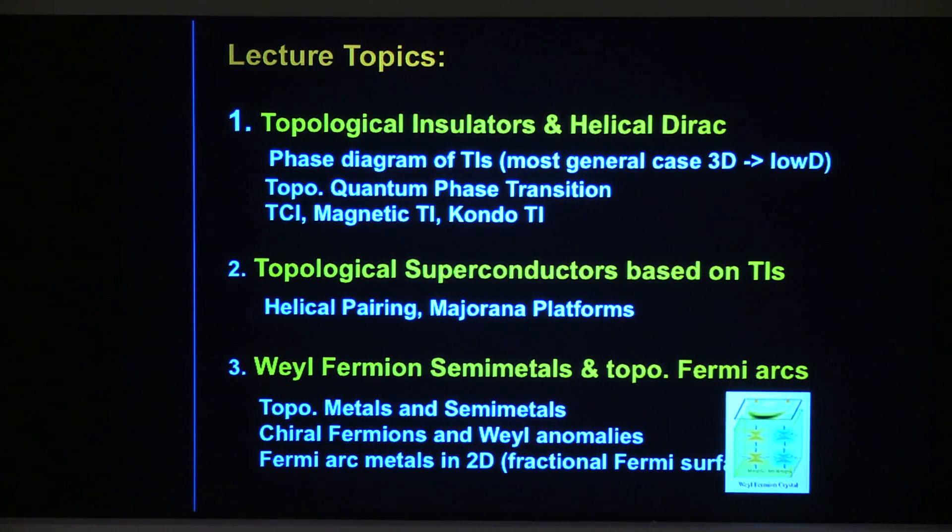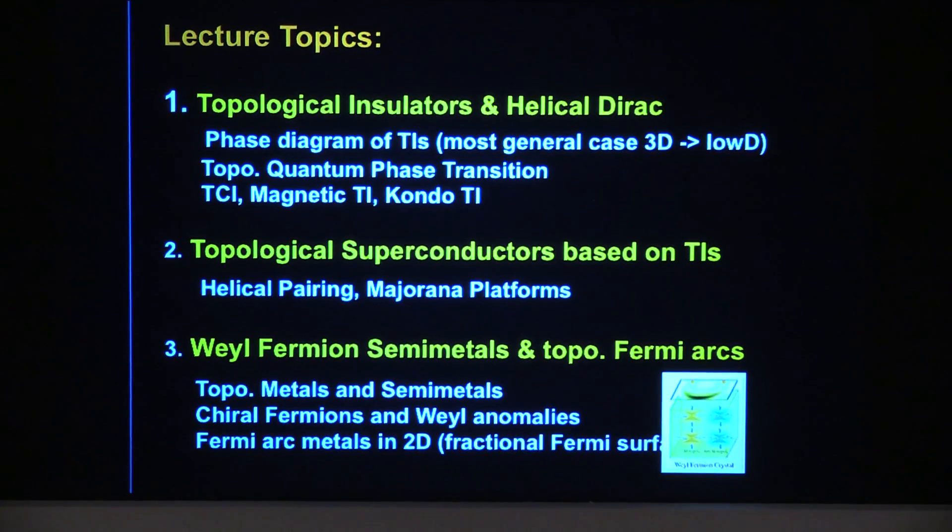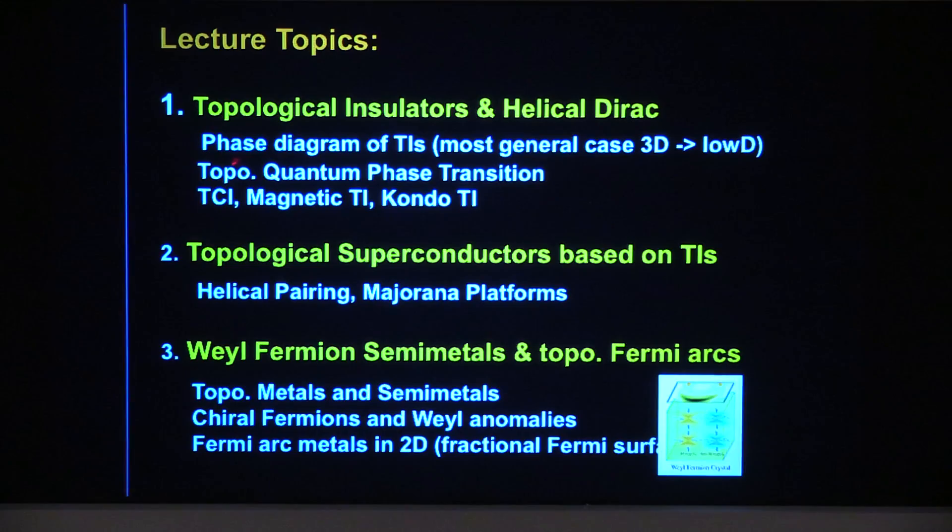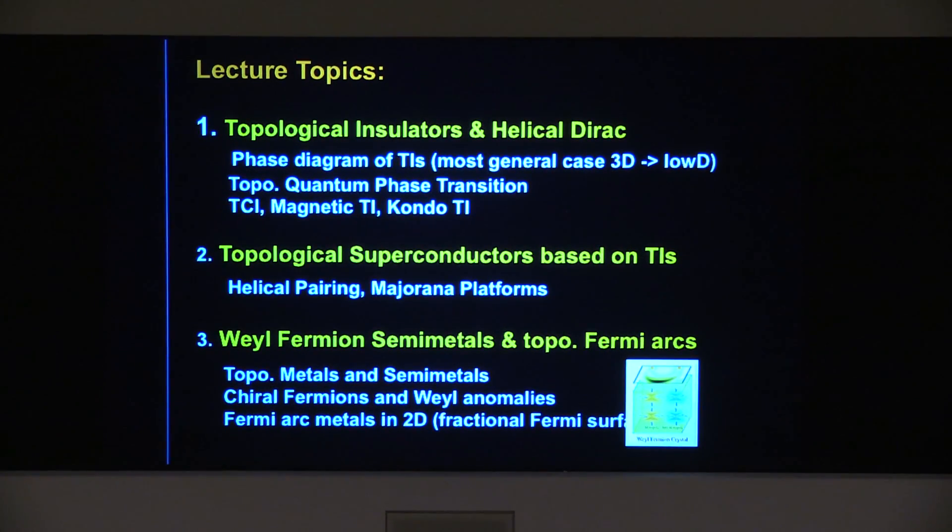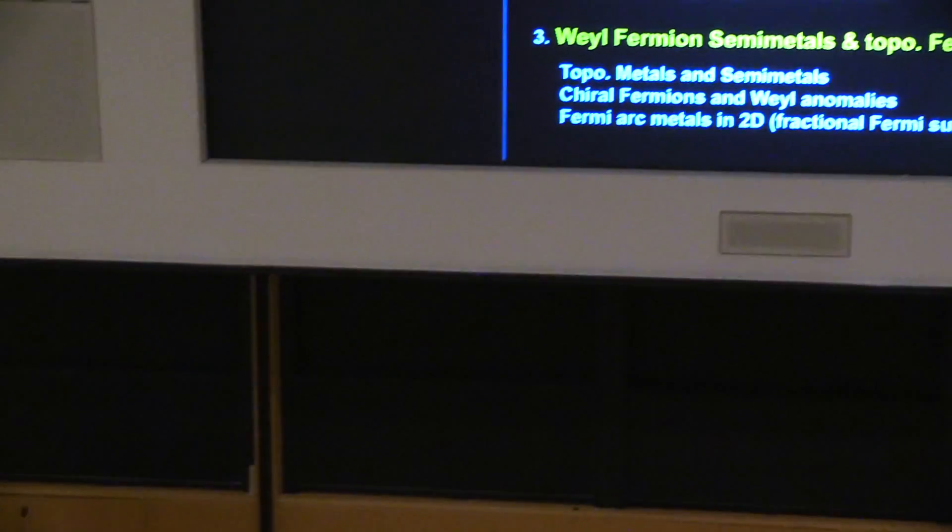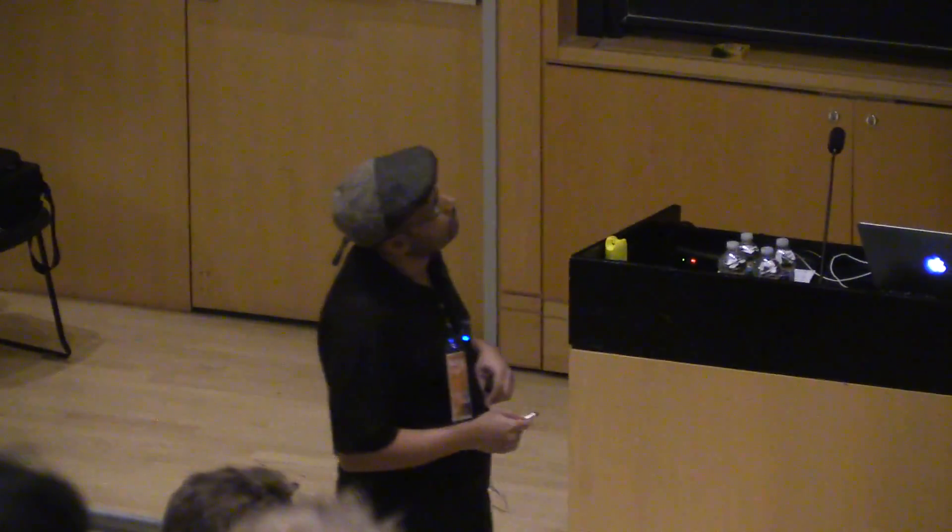I'm supposed to be giving three lectures on this topic. The first one will focus mostly on topological insulators, and that is the story of helical Dirac fermions. I will walk over the phase diagram of topological insulators, the most general case of 3D, and come down to lower dimensions. Then, what is the nature of this topological phase transition, and related topological insulators, for example, topological crystalline insulator, what happens when you magnetize them.